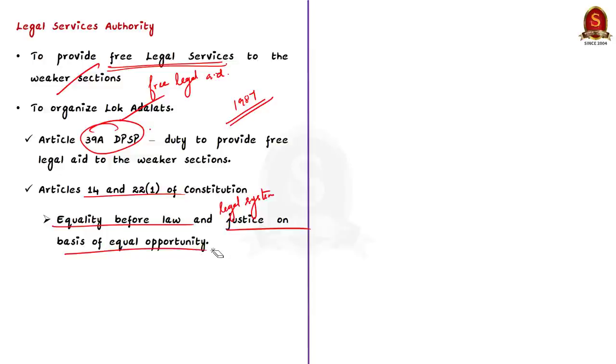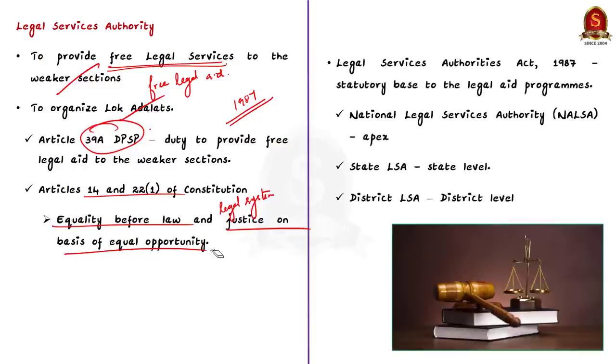Article 14 and Article 22 also make it obligatory for the state to ensure equality before law and a legal system which promotes justice on a basis of equal opportunity to all. In this regard, legal aid strives to ensure that this constitutional pledge is fulfilled in its letter and spirit, and equal justice is made available to the poor, downtrodden and weaker sections of the society. Therefore, Legal Services Authorities Act of 1987 was enacted to give a statutory base to the legal aid programs throughout the country on a uniform pattern. The act has established National Legal Services Authority NALSA at the APEX level and the state Legal Services Authorities SLSA at the state level. But our focus today is on DLSA which is at the district level.